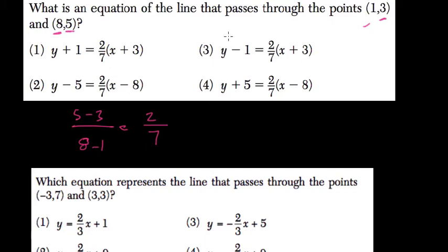Plug in 1 and 3. So here, we'll plug in into choice 3. The number 3 is for y. So 3 minus 1. Does that equal 2/7ths times 1 plus 3? So x plus 3.